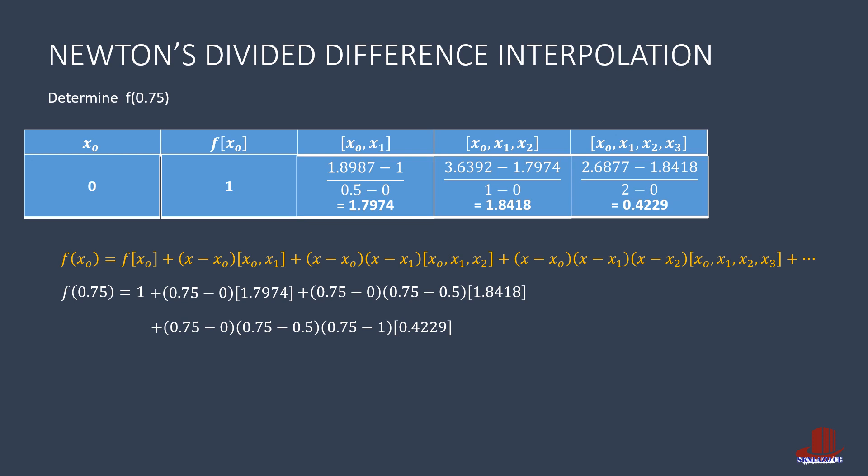All these terms are simplified into 1 plus 1.34805 plus 0.3453 minus 0.0198, which is again reduced into 2.67355 for f of 0.75.